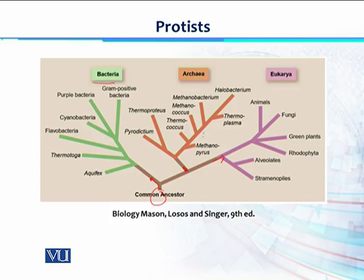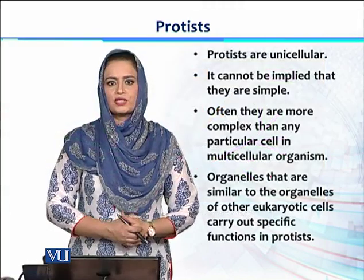Archaea can be divided into other classes, and similarly eukaryotes can be divided into different classes. Although they are very different and have further classes with a lot of diversity within themselves, there is still a concept that they have evolved from a common ancestral organism or cell.